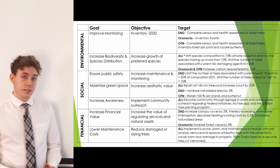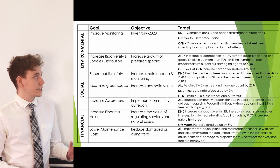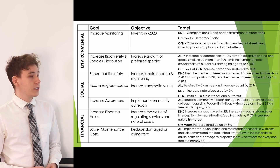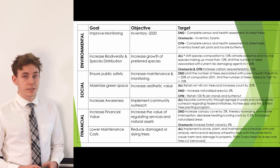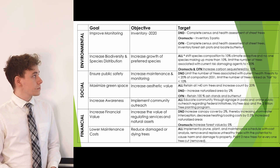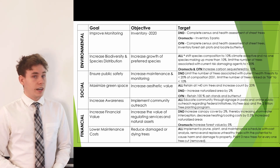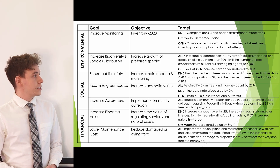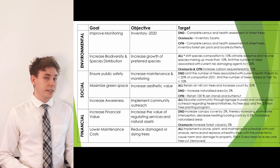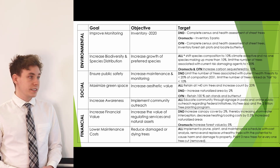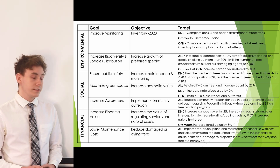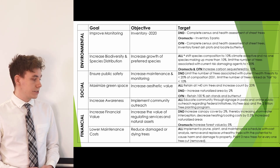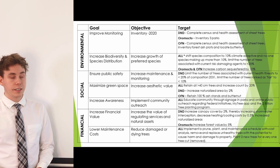Although it would take too much time to discuss each target, there are certain overarching objectives that cover every client. These are to have a comprehensive inventory complete, increase the growth of preferred species, increase maintenance and monitoring, increase aesthetic value, implement community outreach, increase the value of regulating services and natural assets, and reduce damage to dying trees.